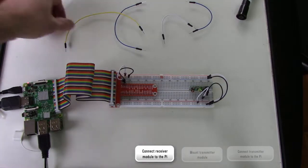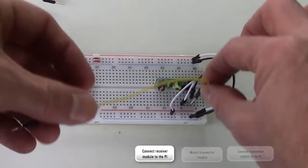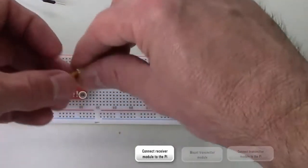Now using a longer jumper wire, connect the data pin closest to ground on the receiver module to GPIO pin number 27 on the expansion board.